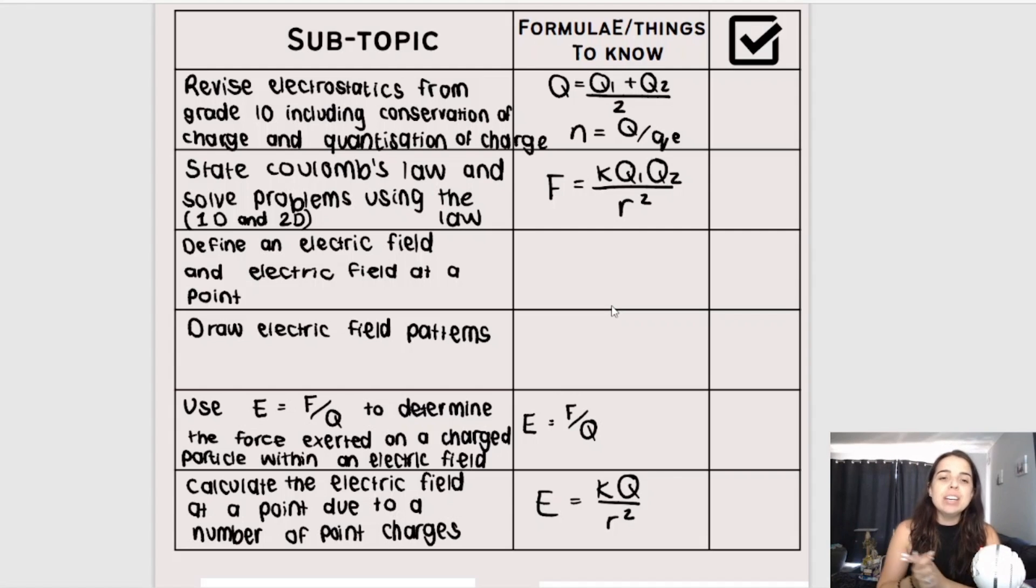You need to know electric field, electric field at a point. You need to draw electric field patterns. These are easy marks. You cannot mess up on these in the exam. Draw them neatly. And then you're going to use these two formulae over here, depending on what the question is asking for, either to calculate the electric field at a point due to various point charges, then you use the bottom one, or you can use the top one to calculate the force exerted or experienced by a particle when it is placed within an electric field. This sounds super complicated. Again, I promise you, if you stick with me, if you follow your teaching class, it won't be complicated.